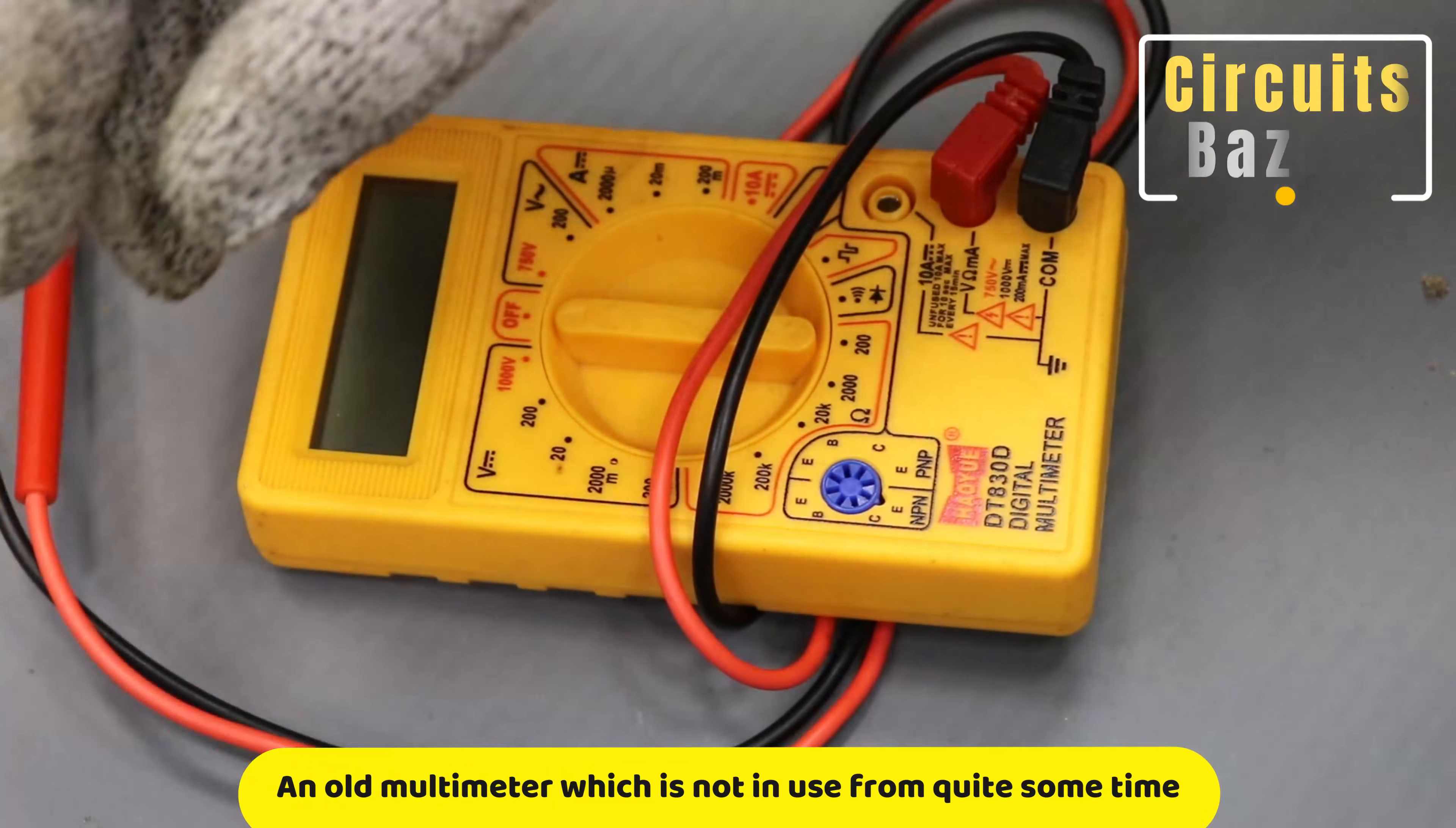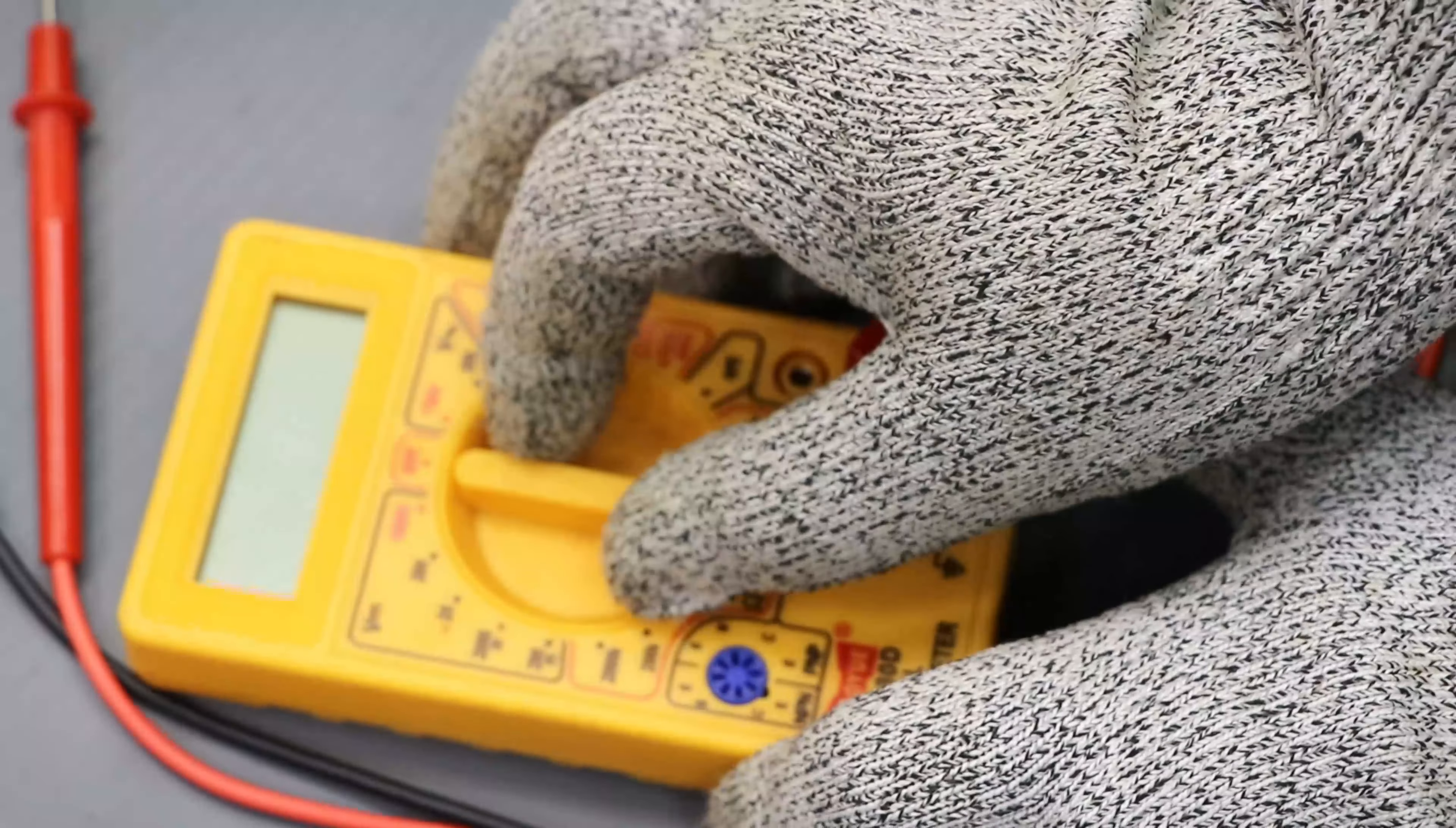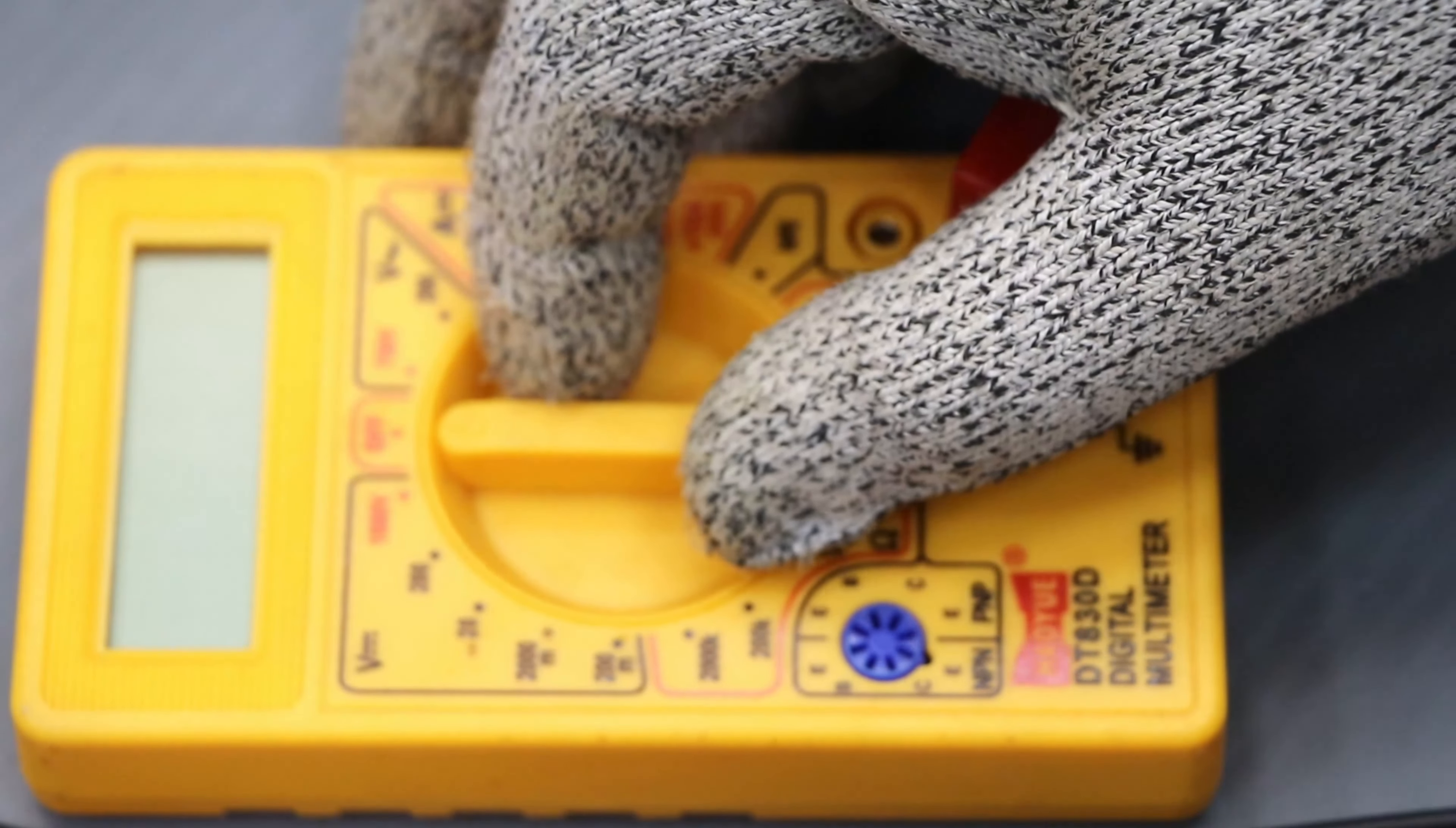Hello friends, so this is an old multimeter which is available in our lab scrap. We are not using it from quite some time and it's not working. There might be many reasons, but the first reason or the first step you can take is just replace the battery. 60 to 70 percent of the times the multimeter will start working.